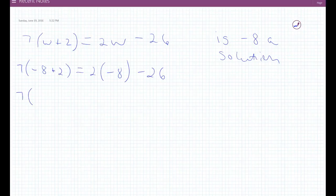So now I have 7 times, and you did the part inside the parentheses first, exactly right. Negative 6 equals, down this side you do order of operations, so you do 2 times negative 8 for negative 16 minus 26.